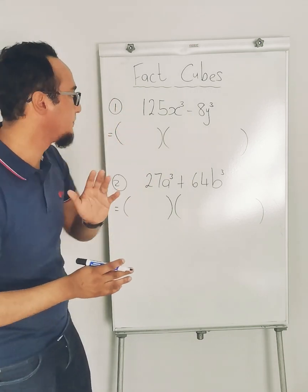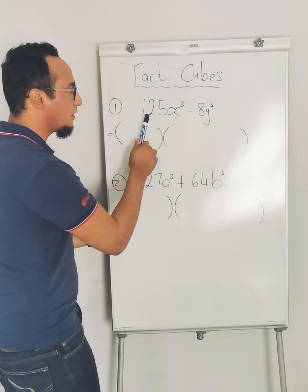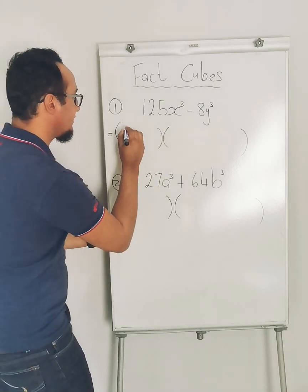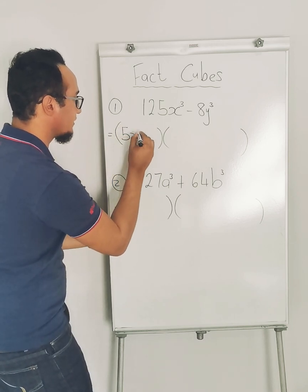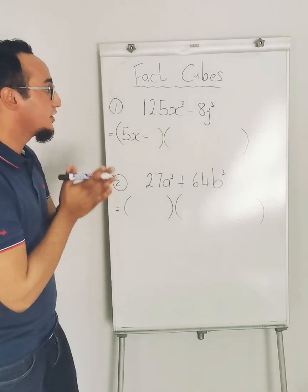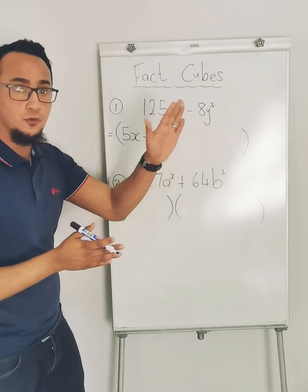The cube root of 125x³ is 5x. What's that sign? Minus. Then the cube root of 8y³ is 2y.